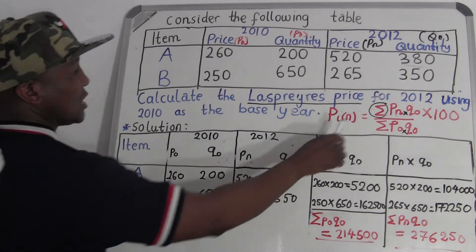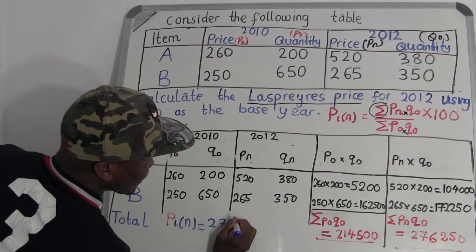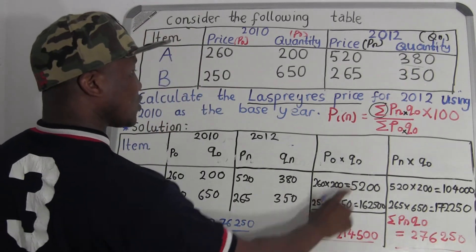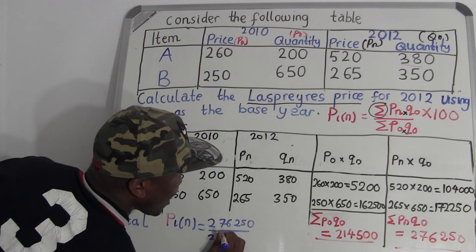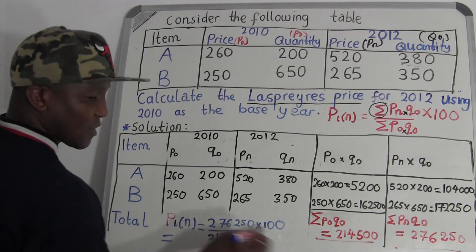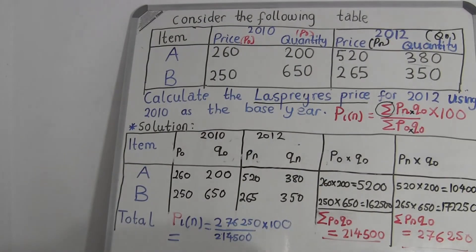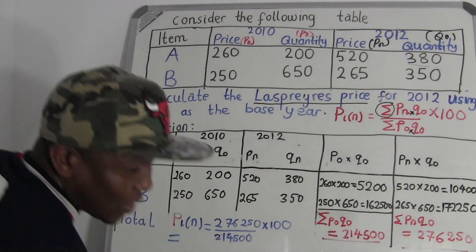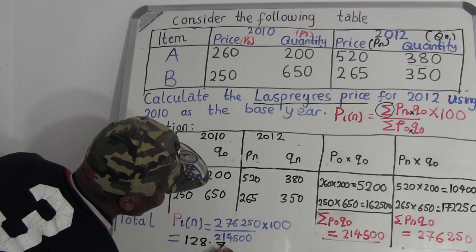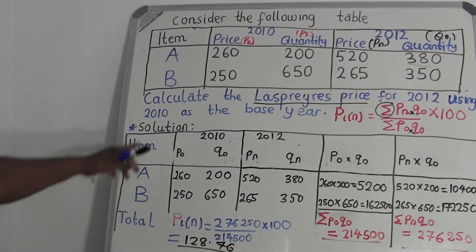So the Laspeyres Price Index equals the sum of pₙq₀ over the sum of p₀q₀, times 100. That is 276,250 divided by 214,500, multiplied by 100. Plugging into the calculator, the final answer is 128.76. So 128.76 is the Laspeyres price index for 2012 using 2010 as the base year.